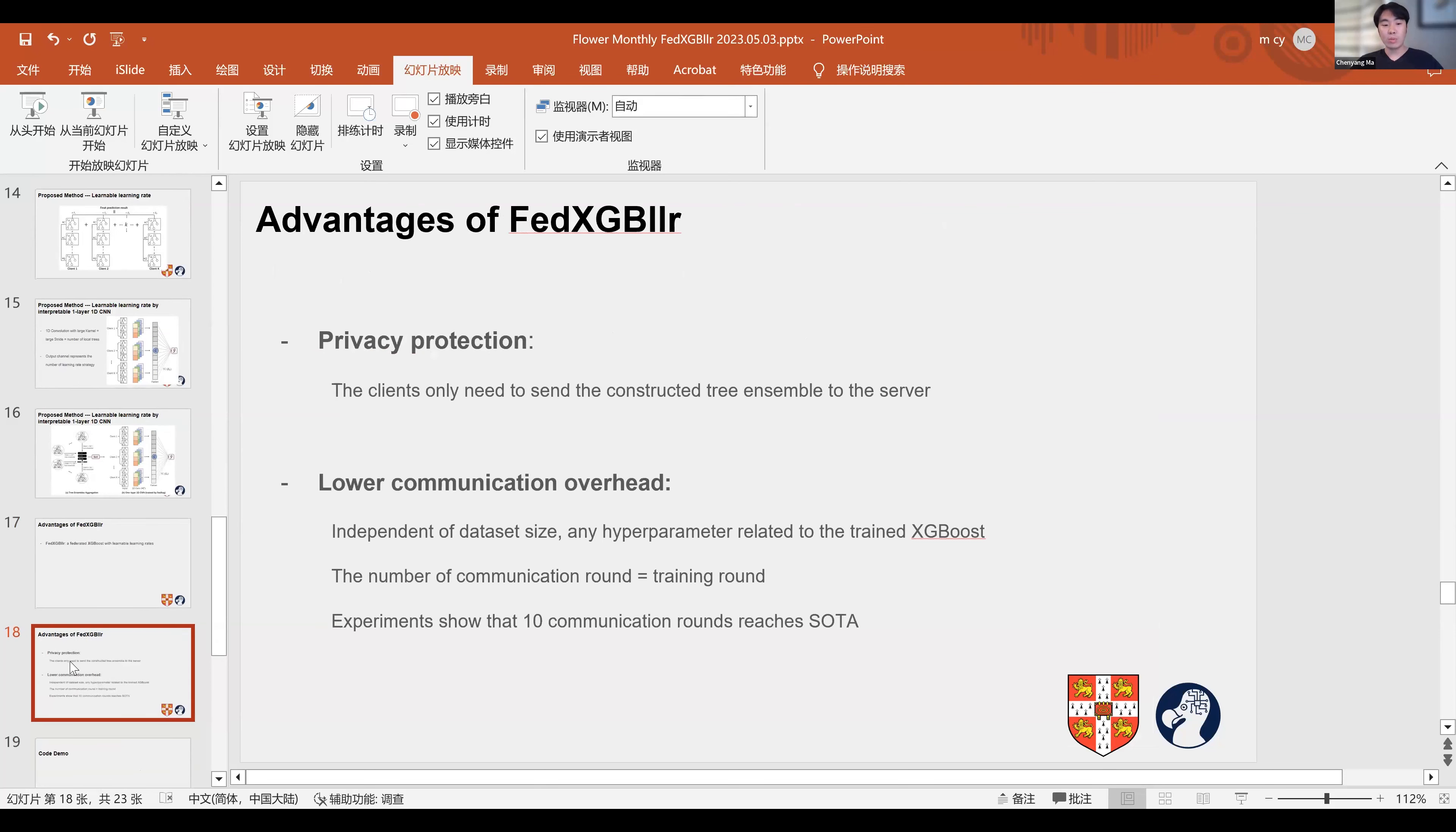We name our approach as FedXGBlr, which stands for federated XGBoost with learnable learning rates. Compared to previous methods, our approach offers two key advantages. First is privacy protection. The clients only need to share the constructed tree ensemble to the server. The sharing of gradients and Hessians which may leak sensitive information is not required. Second is much lower communication overhead. Our method's induced overhead is independent of the data size and any hyperparameter related to training XGBoost. In practice, we find 10 communication rounds to be sufficient to reach performance comparable to state-of-the-art methods.